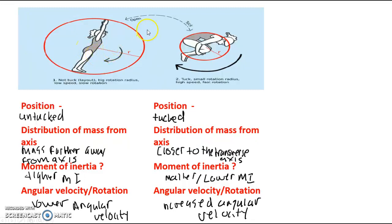So then, in contrast, when the actual tuck position happens and there's a forward rotation, what happens is a tuck there means that the distribution of the mass from the axis is closer. So the mass there is closer to the transverse axis.